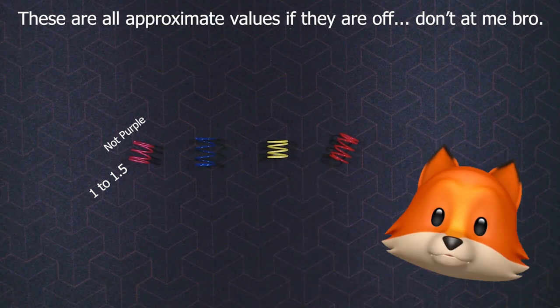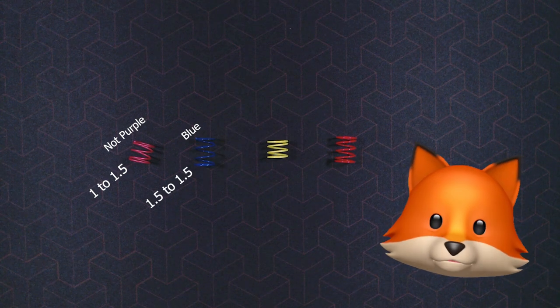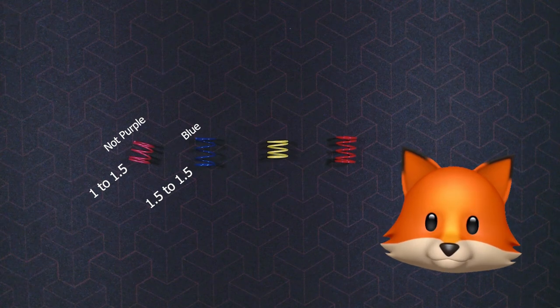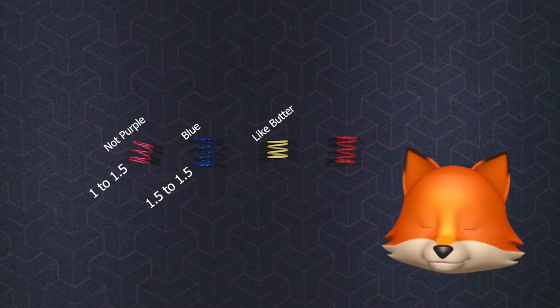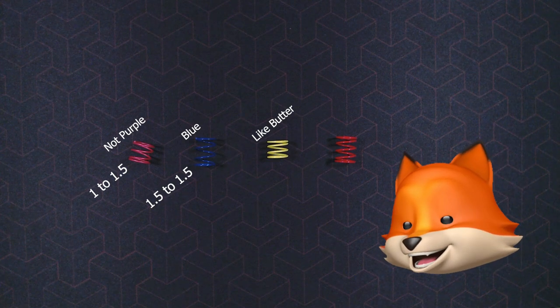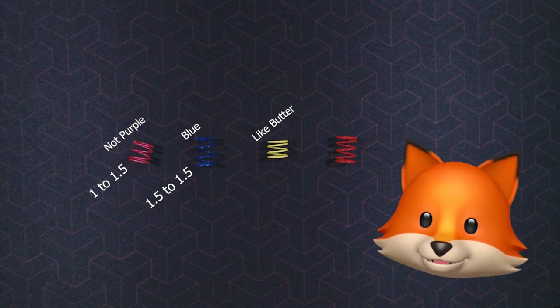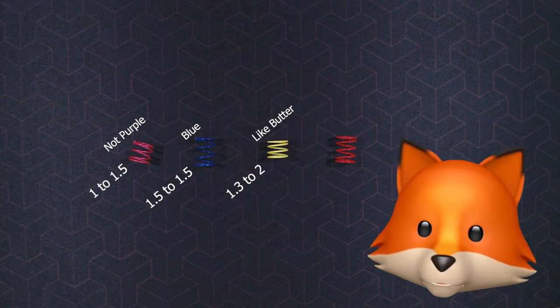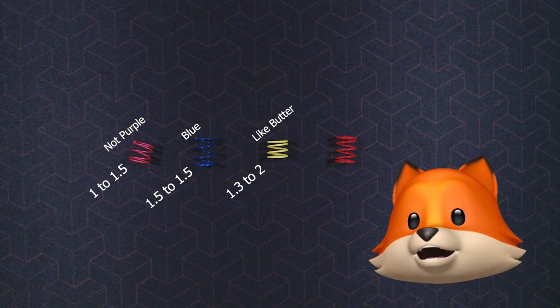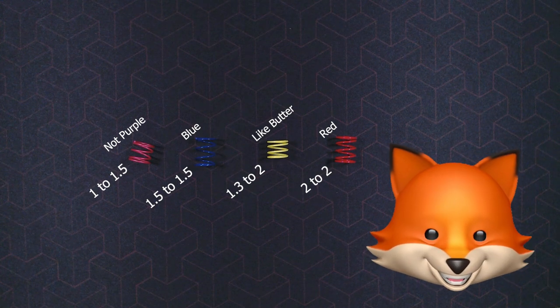So then we get to our blue spring and the blue spring is our consistent spring. 1.5 once you start pushing it out at the endpoint it's still about 1.5. Now then we have the yellow spring. Now this one's just delectable. This is my favorite spring. You guys may like it you guys may hate it but it starts at approximately 1.3 pounds of force and at the end result ends up to being about two pounds and then the red spring ends up being two pounds at start and about two pounds at the end.